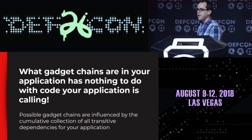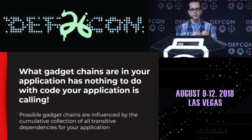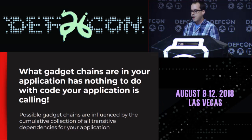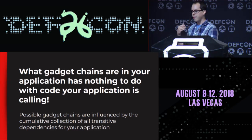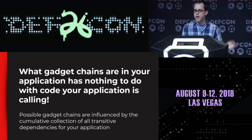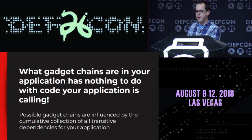The important thing to understand about gadget chains — and what makes deserialization vulnerabilities so dangerous — is that what gadget chains can be constructed has nothing to do with what your application actually does. If there are classes on your class path, they can be specified by the serialized payload and your application can be made to construct them and run whatever magic methods exist in those classes. Your code wouldn't have to have called any of those things — maybe nothing even transitively called those methods. But by the mere fact that they exist on your class path, they can potentially be exploited.